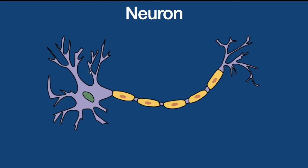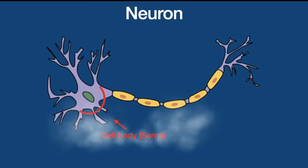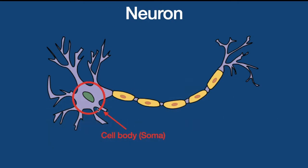So let's look at the anatomy of a neuron. The first part is the cell body, sometimes called the soma — it's this part over here. The green circle is the nucleus of the cell body, and its job is directing the pathway of the neuron.